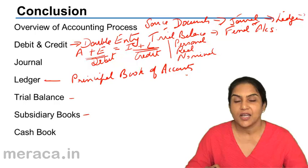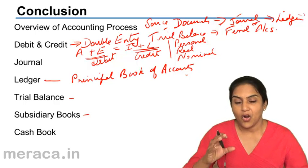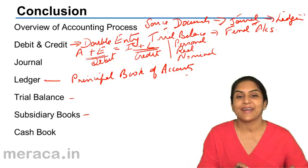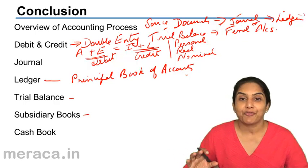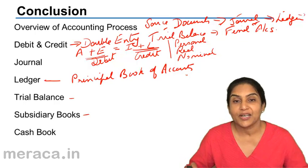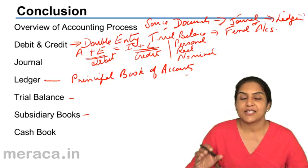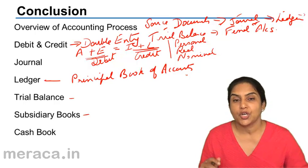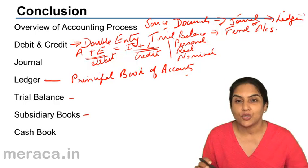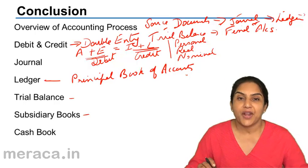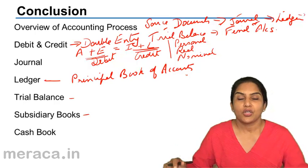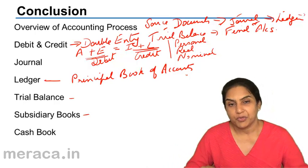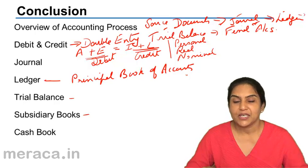The advantage of this is that all transactions of a similar nature, for example, credit purchases can be viewed together in one place. Each journal or each book can be kept by different people, so there is better division of work, greater specialization. And since posting from the subsidiary books to the ledger accounts is done in totals and periodically, some amount of time is saved since each and every transaction does not have to be posted to the purchase account or the sales account or the sales return or the purchase return account. Subsidiary books are like a breakup, like a subdivision of a journal.